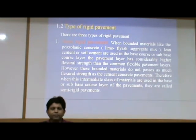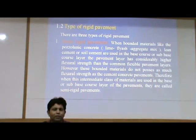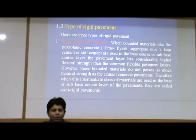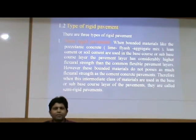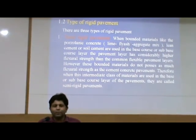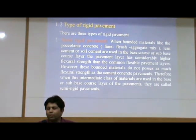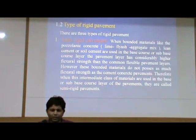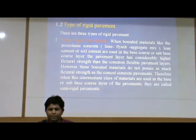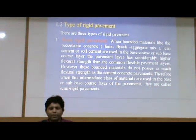Then types of rigid pavement — there are three types. Number one, semi-rigid pavement: when bounded materials like pozzolanic concrete, lime, fly ash, aggregate mix, lean cement or soil cement are used in the base course or subbase layer, the pavement layer has considerably higher flexural strength than common flexible pavement layers. However, these bounded materials do not possess as much flexural strength as cement concrete pavements. Therefore, when this intermediate class of materials are used in the base or subbase layer, they are called semi-rigid pavements.